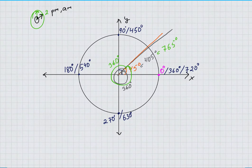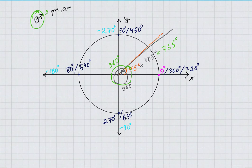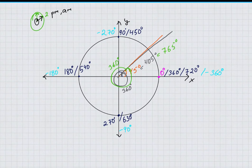If you go towards the negative y-axis you will have negative 90 degrees, then negative 180 degrees, then negative 270 degrees, and coming back to zero with negative 360 degrees. Just like before, you can keep going and keep subtracting 90 degrees.